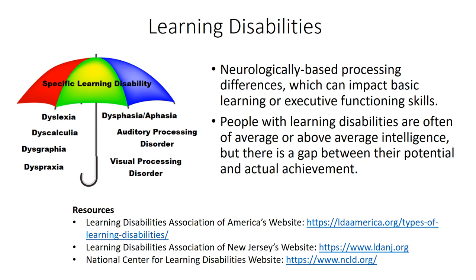These processing differences can interfere with learning basic skills such as reading, writing, and math. They can also interfere with executive functioning skills such as organization, time planning, abstract reasoning, long- or short-term memory, and attention. Examples of learning disabilities are auditory processing disorder, dyscalculia, dysgraphia, dyslexia, language processing disorder, non-verbal learning disabilities, and visual perceptual or visual motor deficit. Specific learning disabilities in math, reading, or writing are also common, and ADHD, ADD, and dyspraxia are related to learning disabilities as well.